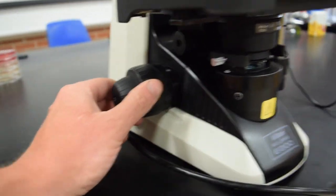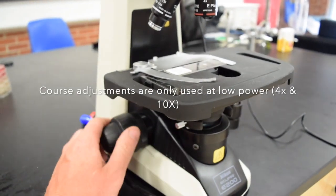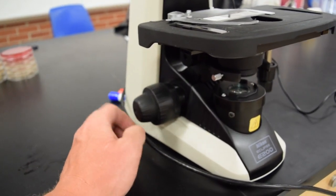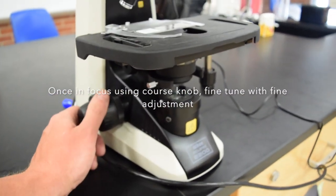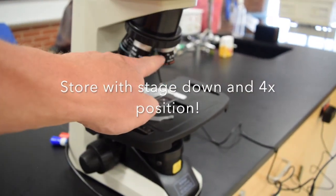Here we have the coarse adjustment knob - you can see the stage moves up and down very rapidly. The outside portion is the fine adjustment knob, which moves the stage very slowly. When you store the microscope, store it with the stage all the way down in the 4x position.